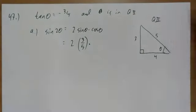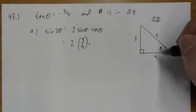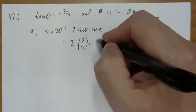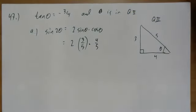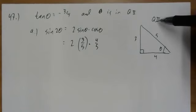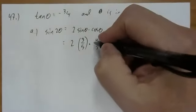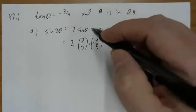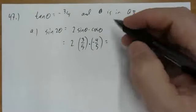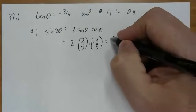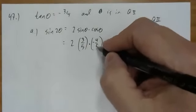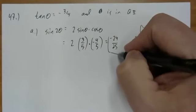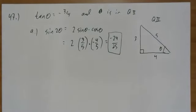Cosine of theta is adjacent over hypotenuse, but the angle is in quadrant two where cosine is negative, so cosine theta equals negative four-fifths. Now: two times three-fifths times negative four-fifths. Two times three times four is 24, with a negative, over a denominator of five times five equals 25. So sine of two theta equals negative 24 over 25.